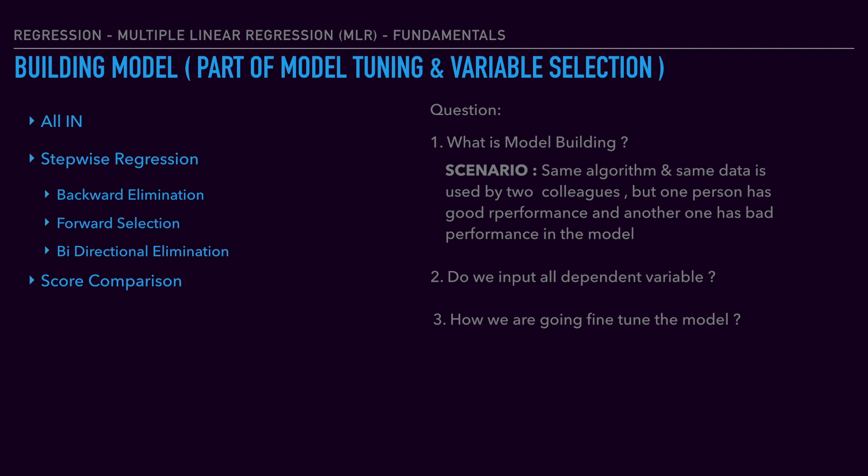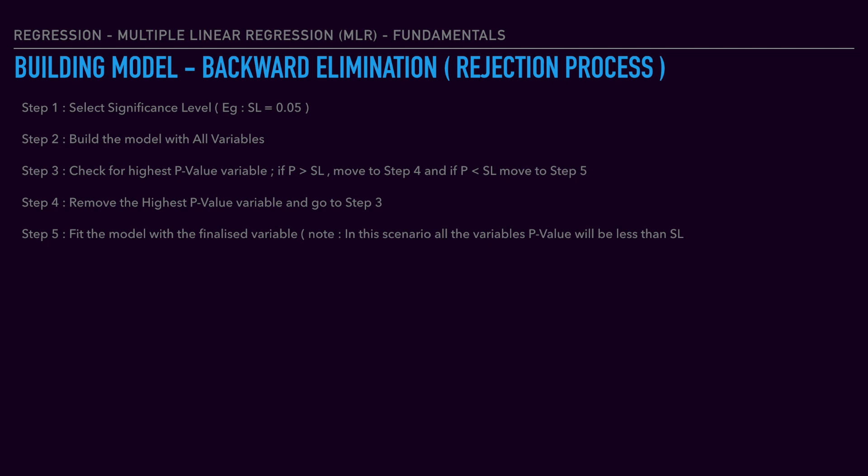For all-in, you can give all the other variables as model input. Now let's get into the backward elimination technique, also called the rejection process. Step one is to choose the significance level. Most often data scientists will choose 0.05 or 5 percentage, or 0.01 or 1 percentage — it all depends upon the problem scenario. Step two is to build the model with all the variables, giving all the independent variables to the model.